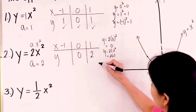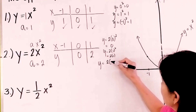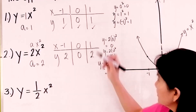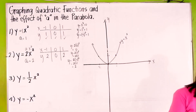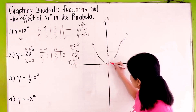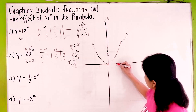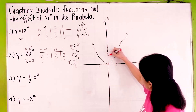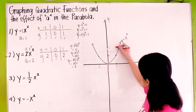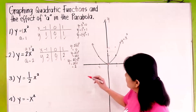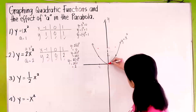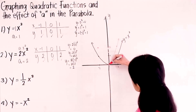2 times 1 is 2. When x is negative 1, y equals 2 times 1, which is also 2. Then we plot the points using a red color. (0, 0) is still here. When x is 1, y is 2, so that point is here. When x is negative 1, y is 2, so that point is here. Let's connect the three points.